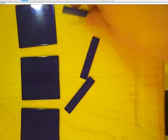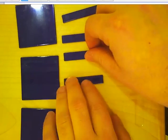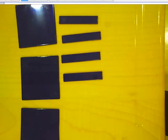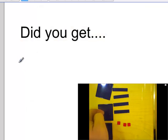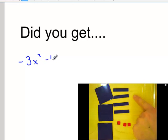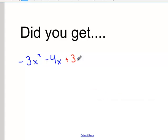Lay out some more tiles. Can you create an algebraic expression for this? Try it now. Do you see how I've laid out three negative x squared tiles, four negative x tiles, and three positive units? Did you get three x squared minus four plus three?